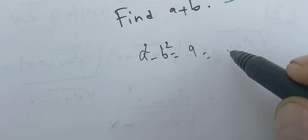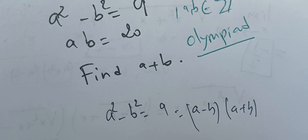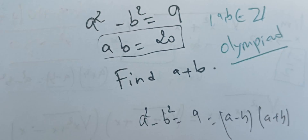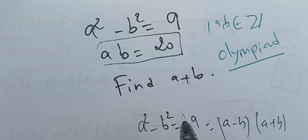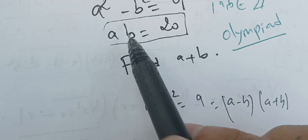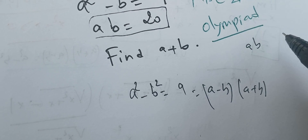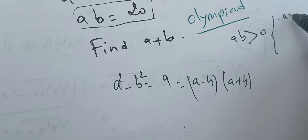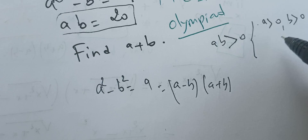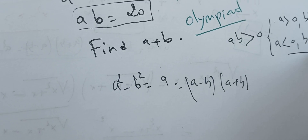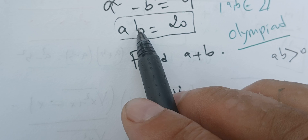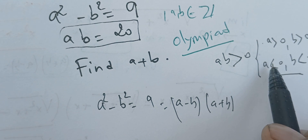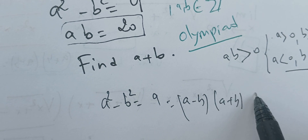The key idea is that a squared minus b squared equals 9, which we can write as (a minus b) times (a plus b). We use ab = 20 as a check. Since a times b is positive, either both a and b are positive, or both are negative. We'll treat two cases: both positive and both negative.